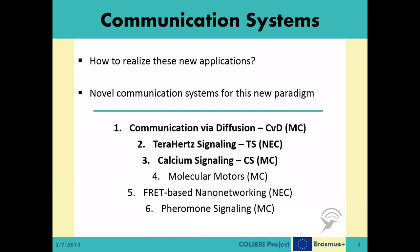Being a new and pioneering field, currently the keywords in nanonetworking research are not as concrete as they are in more established topics. Although we will be using the aforementioned names for the systems, they might be called with different names in the literature. For example, CVD might be called diffusion-based molecular communication or just diffusion communication. While the first, third, fourth, and sixth systems are MC-based, the second and fifth systems are NEC-based. In this module, we will only be covering the first three systems mentioned in this list, and in this video we will specifically look at the CVD system.